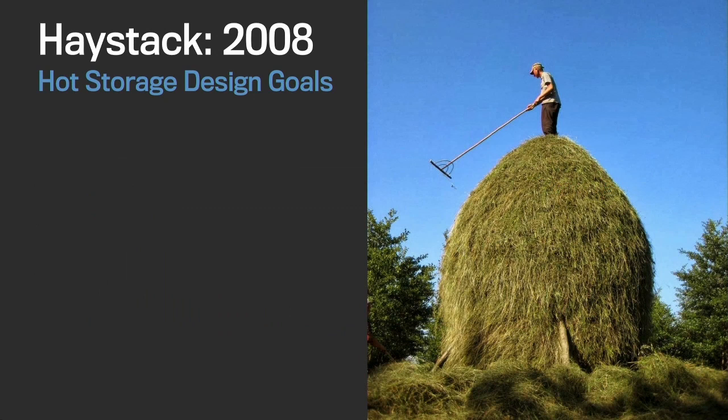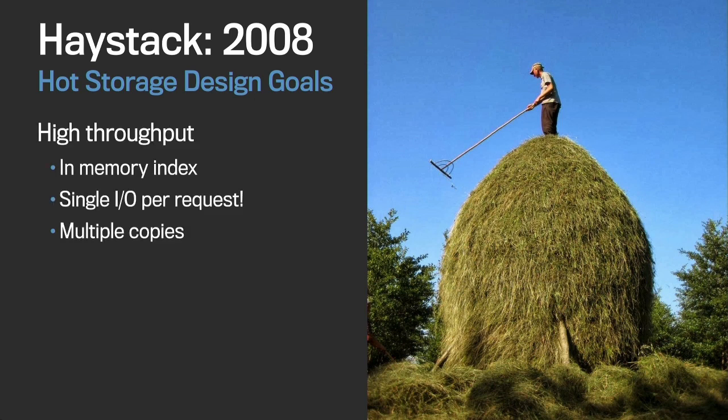Our hot storage system is called Haystack. As with any blob storage system, it has two primary design goals. The first is throughput, and we achieve throughput in two ways. First, instead of storing blobs directly on disk in a file system, we store them together in large blocks called volumes, and we keep an in-memory index of the volume so that any request can be served in a single operation to disk — no file system metadata overhead. However, with extremely hot content, one host is still not enough to serve this content, so we need to keep multiple copies as well.